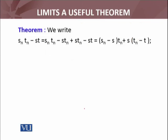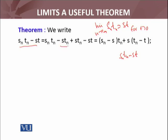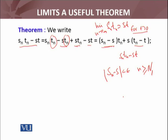Let's first prove: limit as n approaches infinity of Sn·Tn equals S·T. For every epsilon greater than zero, I consider the absolute value of Sn·Tn minus S·T. I add and subtract the same term, then take Tn common giving Sn minus S, and take S common giving Tn minus T. Since Sn and Tn are convergent, for every epsilon greater than zero there exist integers N1 and N2 such that |Sn - S| < epsilon and |Tn - T| < epsilon.